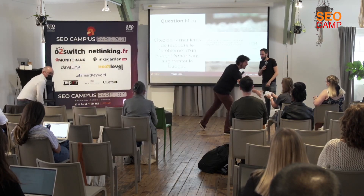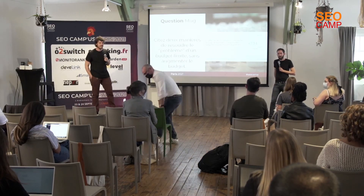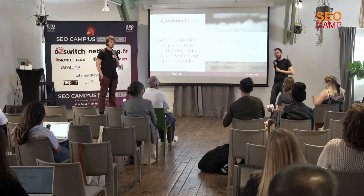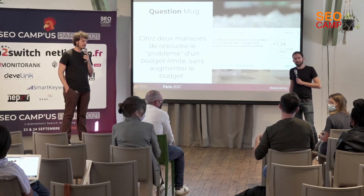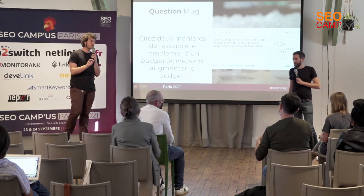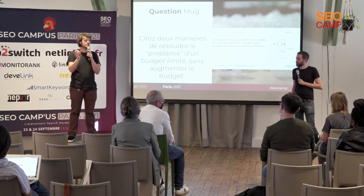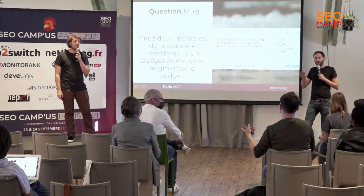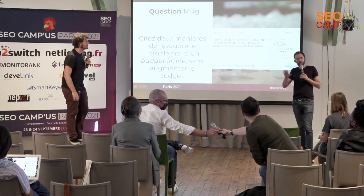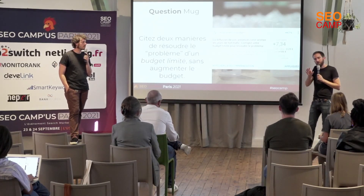Question : tu proposais d'isoler les mots-clés qui convertissent dans des campagnes spécifiques — est-ce que ça réinitialise les performances du mot-clé si on le sort de la campagne ? En réalité, ce qu'on fait, c'est qu'on va aller dupliquer une campagne, et donc tous les mots-clés qui n'ont pas encore converti, ce sont ceux-là qu'on va sortir. Ceux qui ont déjà converti, on garde la data et la même campagne. On fait une campagne test qu'on sépare pour avoir des budgets séparés, et le compte garde son historique également.